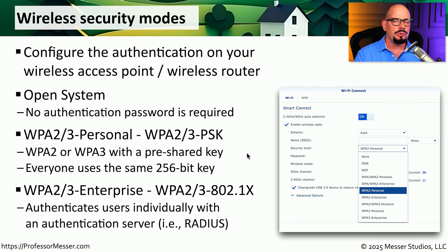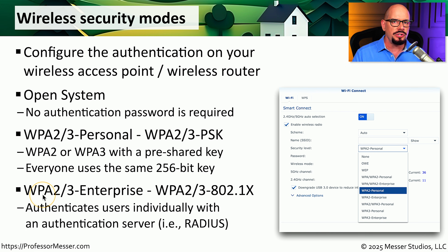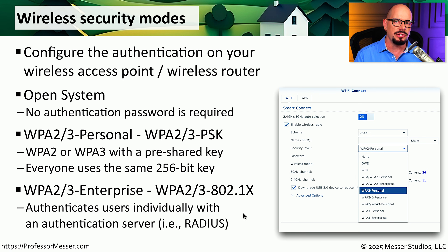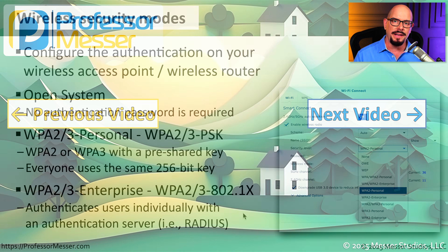In a business, however, you don't want everyone using the same key to connect to the wireless network. Every individual should have their own logon. If you look at your access point, there's probably a configuration to set up WPA2 or WPA3 in an enterprise mode, also listed as 802.1x mode. This is an authentication mode that requires someone to log in with their username and password, and your access point uses a centralized authentication database to confirm the user is authenticating correctly. This means every person in your organization has a different login, and if they leave the organization, you can simply disable their account and they no longer have access to the wireless network.